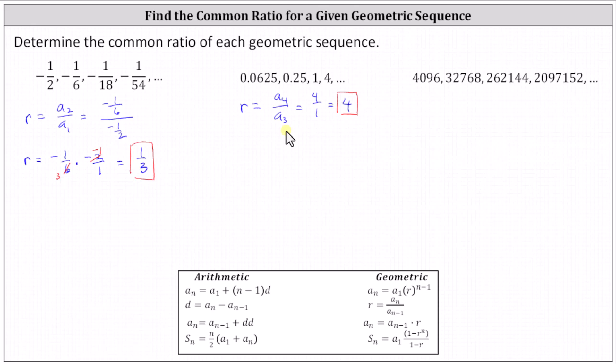And now for the last sequence, which again we know is geometric, let's use the first two terms because these are the smallest terms of the sequence, which indicates the common ratio r equals a sub two divided by a sub one, which is 32,768 divided by 4,096.